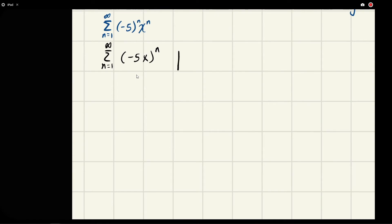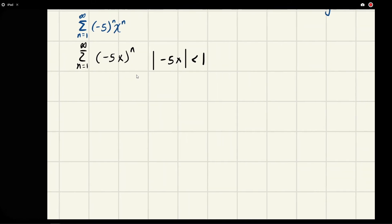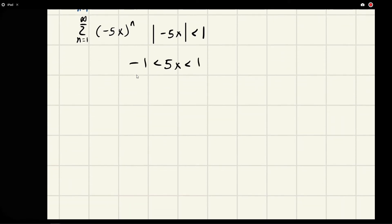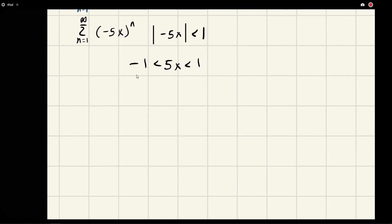So we say the magnitude of negative 5x has to be less than 1. Another way of saying this is that 5x, just take the magnitude, has to be less than 1 or greater than negative 1. We're just writing out the absolute value. Then from here we can divide both sides by 5 and we get 1/5 and negative 1/5.